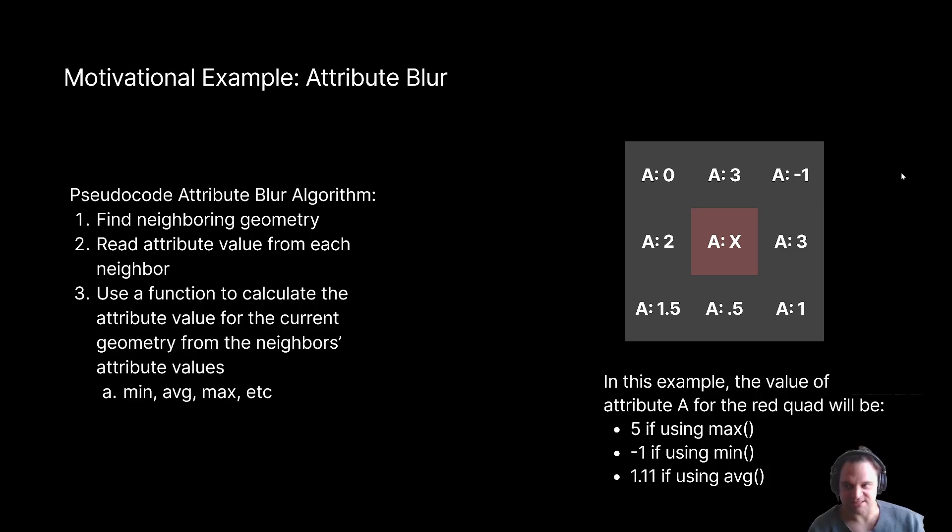So the pseudocode, as I said, is find the neighboring geometry, whether that's points or primitives, read in the attribute values, whatever attribute we are particularly interested in, and then use a function to calculate the current geometry's attribute based on the values of its neighbors. This can be either the minimum, the average, the maximum, or some completely bespoke distance-weighted parametric interpolation, like whatever.